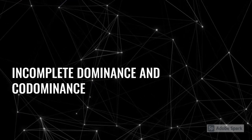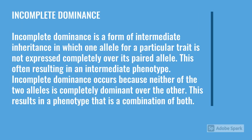Incomplete dominance is a form of intermediate inheritance in which one allele for a particular trait is not expressed completely over its paired allele, often resulting in an intermediate phenotype. Incomplete dominance occurs when neither of the two alleles is completely dominant over the other, and the resulting phenotype is a combination of both.